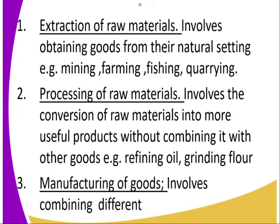Number two is the processing of raw materials. This is a secondary process. It involves the conversion of raw materials into more useful products without combining it with other goods. For example, refining oil and grinding flour. Industries are used to process raw materials such as farm products and mining products.